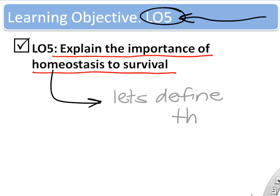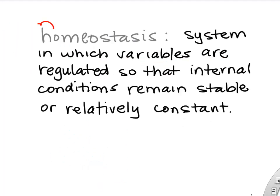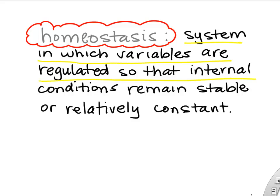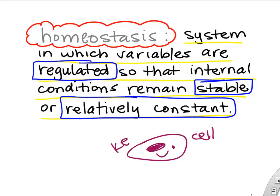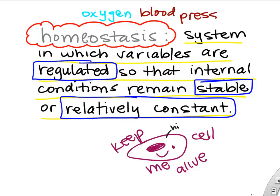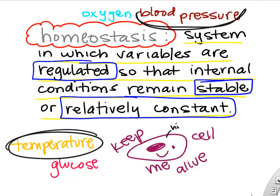Let's define homeostasis. After checking Google and Siri/Wikipedia, a good definition is: homeostasis is a system in which variables are regulated so that the internal conditions remain stable or relatively constant. Basically, homeostasis is the process by which your body keeps its internal environment relatively stable — keeping oxygen levels, blood pressure, and temperature fairly constant — and that keeps your cells alive.